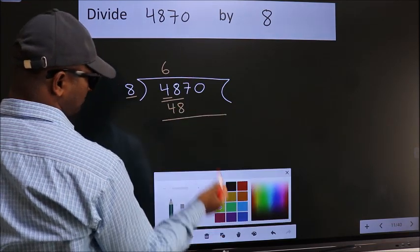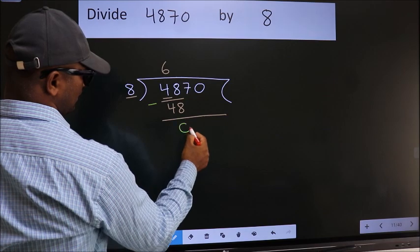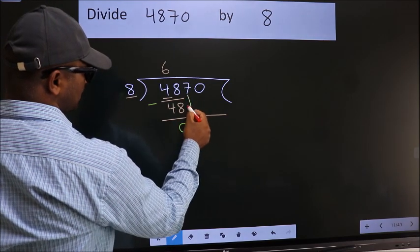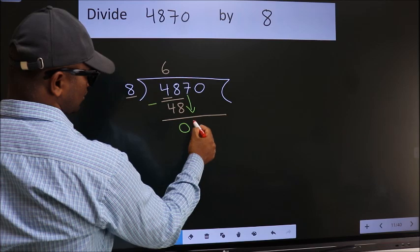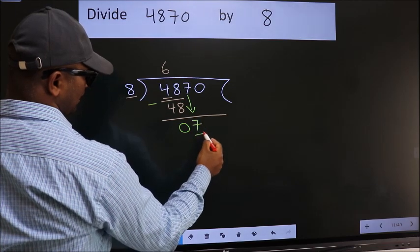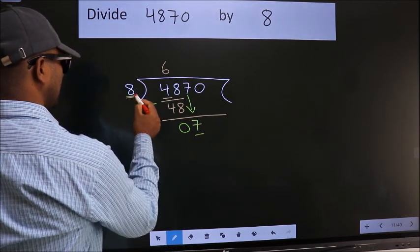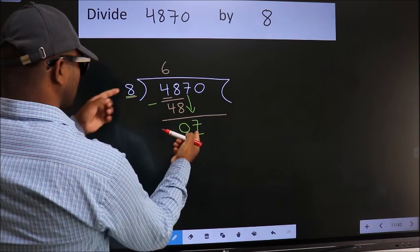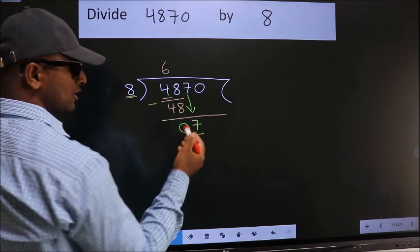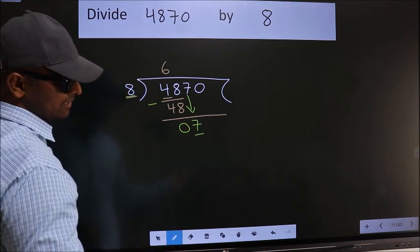Now we should subtract. We get 0. After this, bring down the next number, so 7 comes down. Here we have 7. 7 is smaller than 8, so we should bring down the second number.